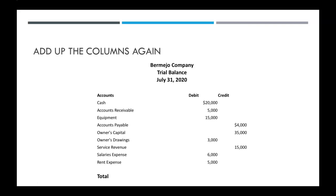So let's first look at an example where you need to just add up the columns again. We have our debits and we have our credits, and we add them up and we get 54,000 as our credits and total debits of 40,500. But if you add up your debits again, you'll see that your debits end up being 54,000 as well. It might have just been an error in your math — you might have just plugged a number incorrectly into your calculator. So the first step is just add up your debits and your credits again.